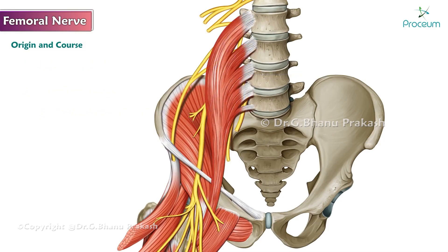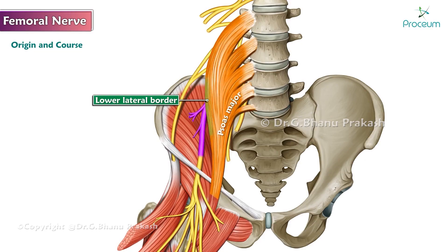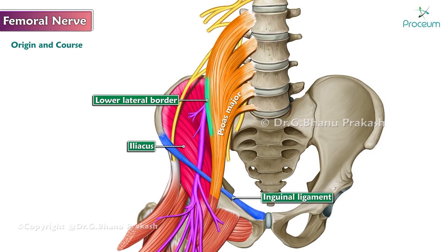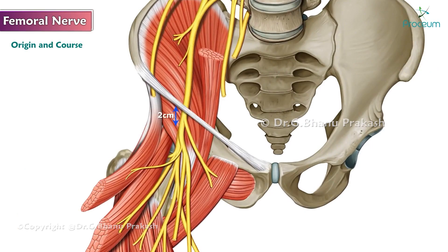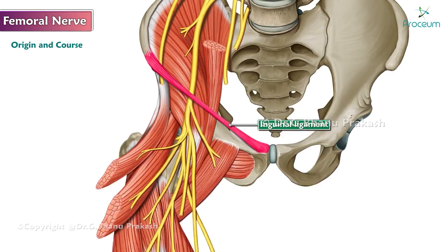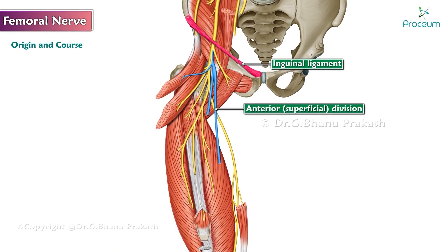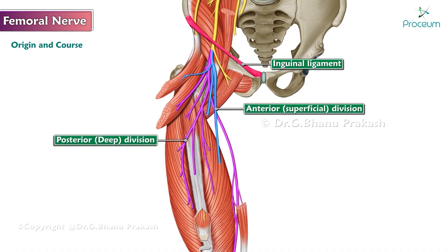The femoral nerve emerges from the lower lateral border of the psoas major and runs between the psoas and iliacus to enter the anterior compartment of the thigh behind the inguinal ligament and lateral to the femoral sheath. Two centimeters distal to the inguinal ligament, it divides into anterior (superficial) and posterior (deep) divisions.